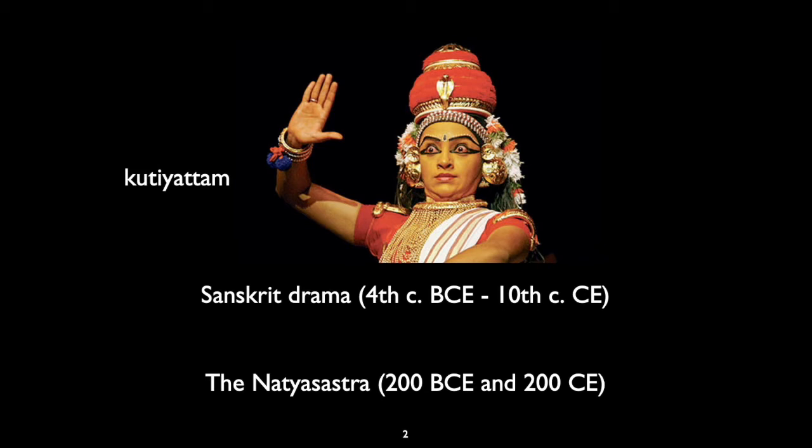Essentially, Sanskrit drama dies out and we have no real knowledge of what it actually looks like, except that it was written down in exhaustive detail in a book called the Natya Sastra, which was composed from about 200 BCE to about 200 CE. Sometime in this 400-year period, people were compiling and describing what became known as Sanskrit drama.